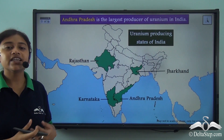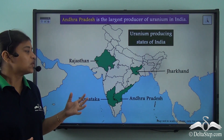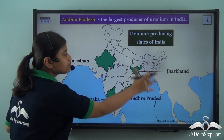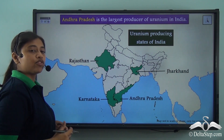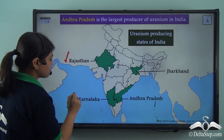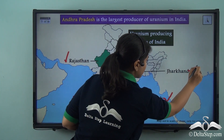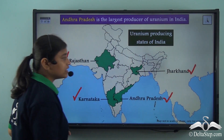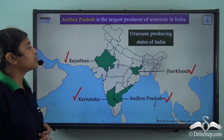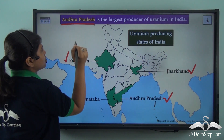Now if we take a look at the map of India, the leading producers of Uranium are Rajasthan, Karnataka, Andhra Pradesh and Jharkhand. Out of these, the largest producer of Uranium is Andhra Pradesh.